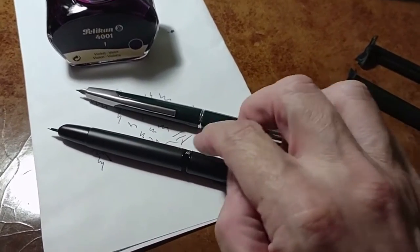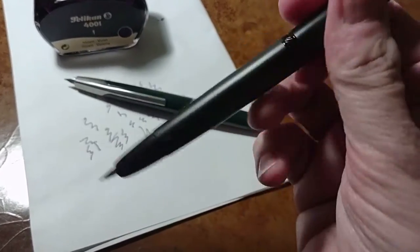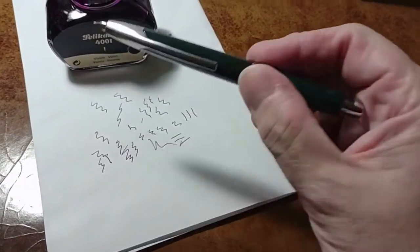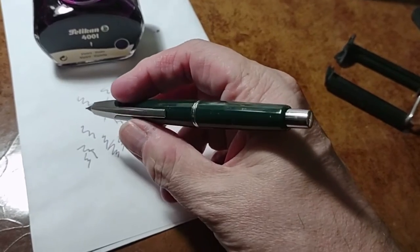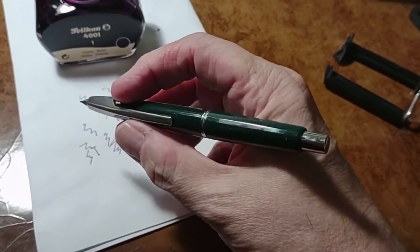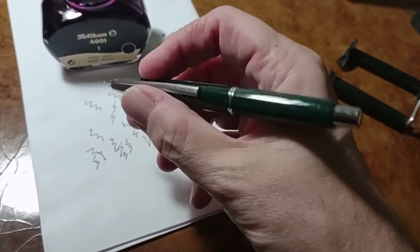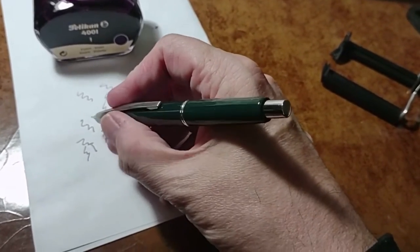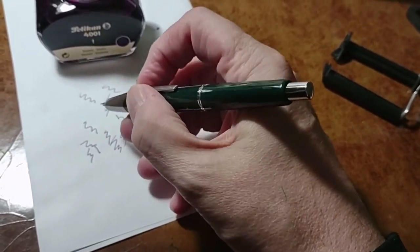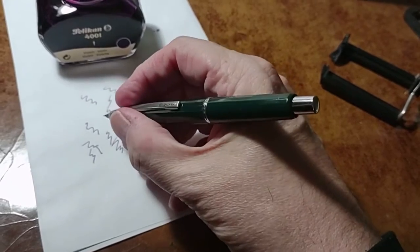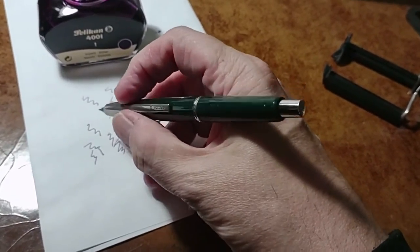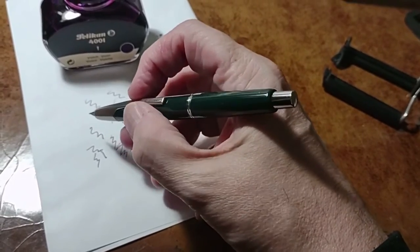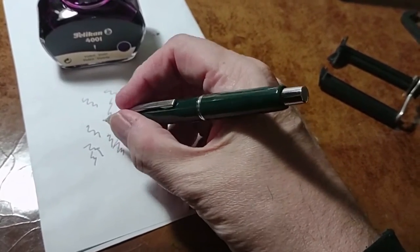Which is a nice idea for this, because if anyone had objection to the Namiki vanishing point, then later the Pilot vanishing point, it was that the clip might be in the way when gripping the pen. I never found that, but I think it was more psychological than physical.